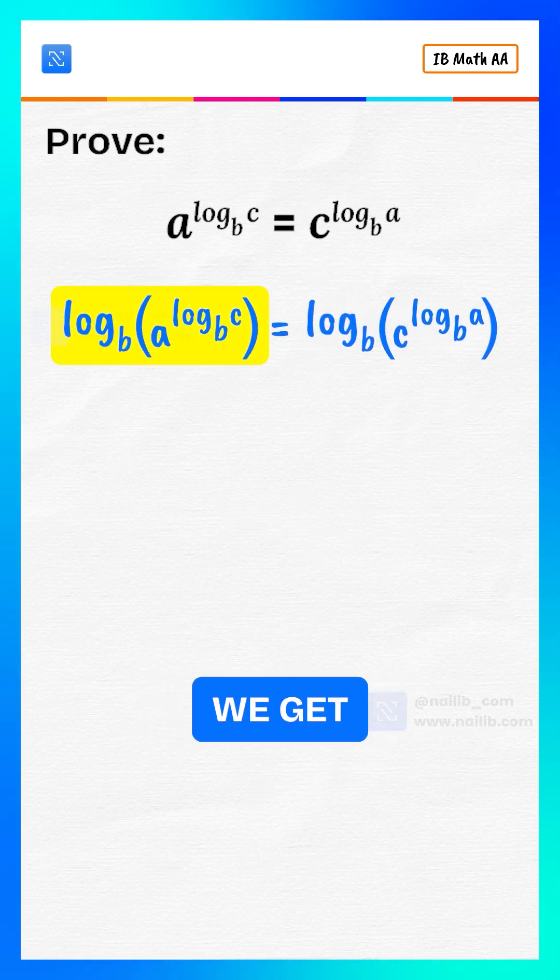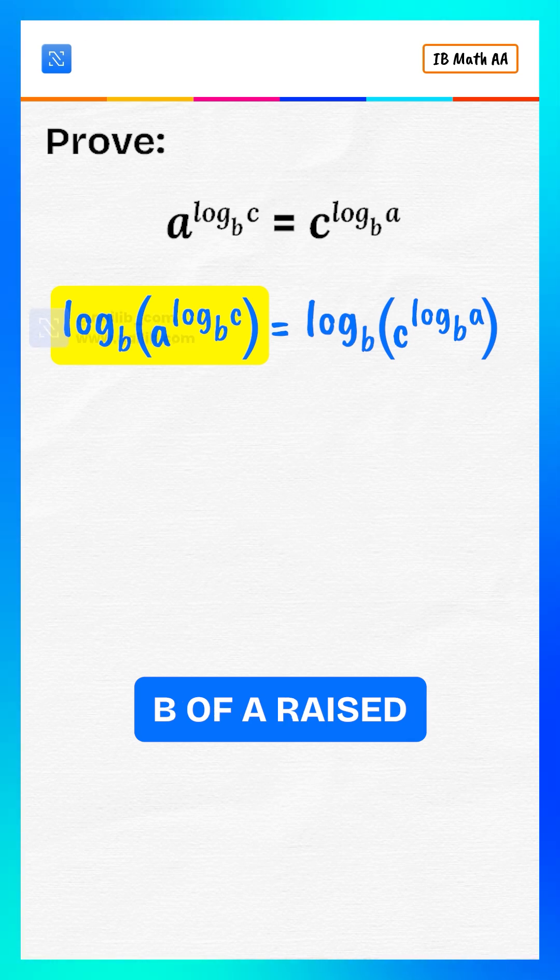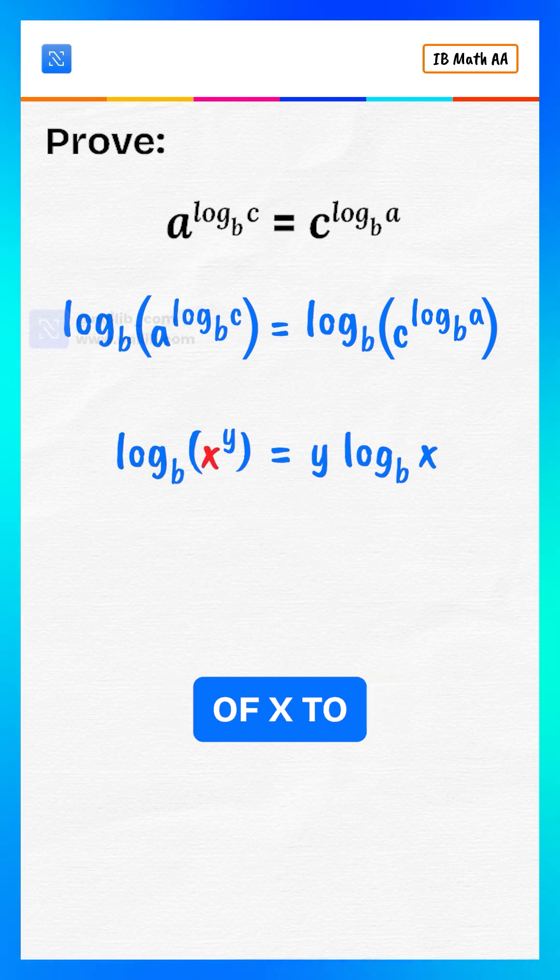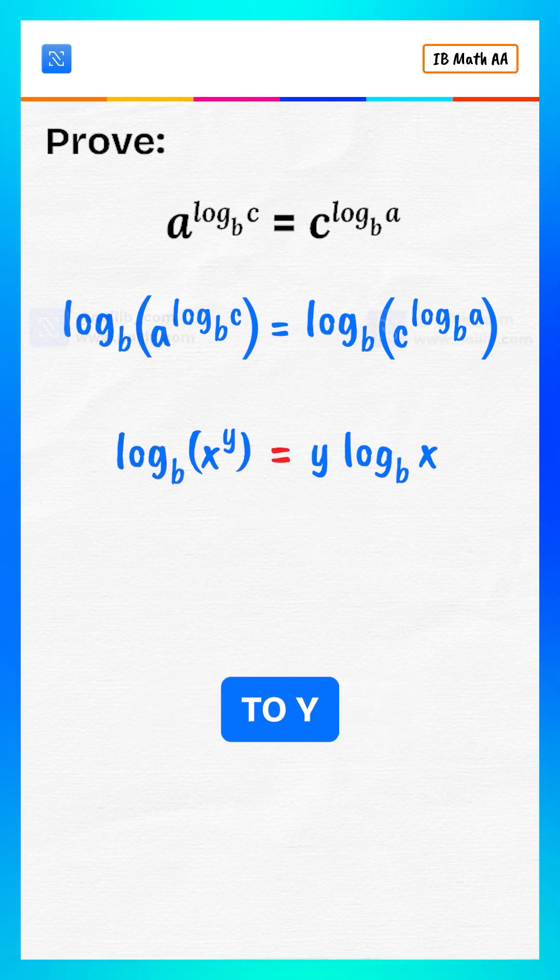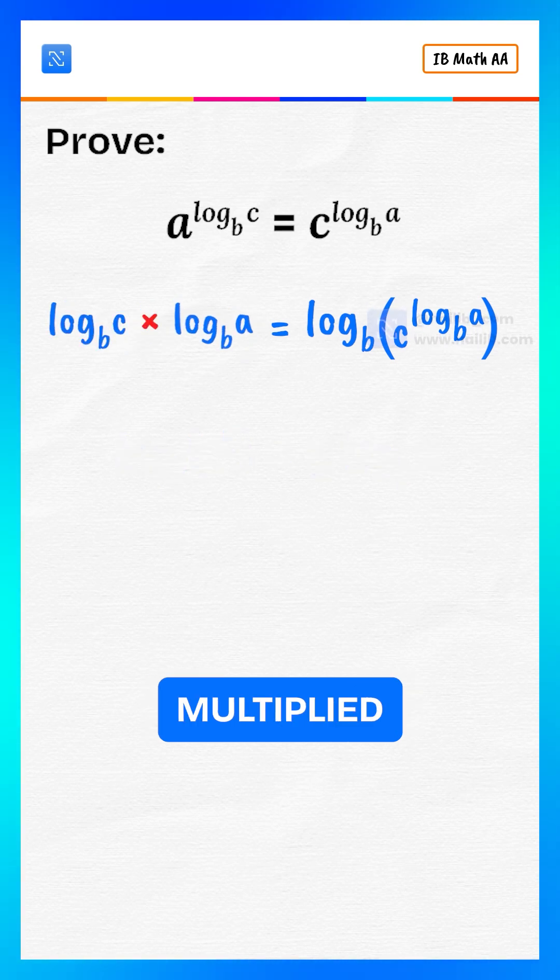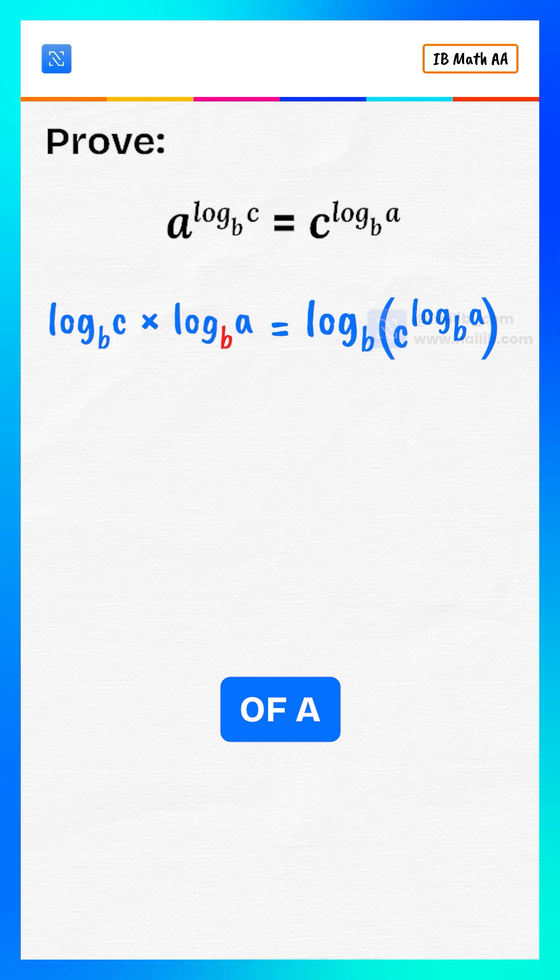On the left-hand side, we get log base b of a raised to log base b of c. Use the identity: log base b of x to the power y is equal to y multiplied by log base b of x. So log base b of c multiplied by log base b of a.